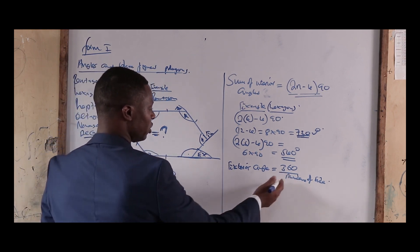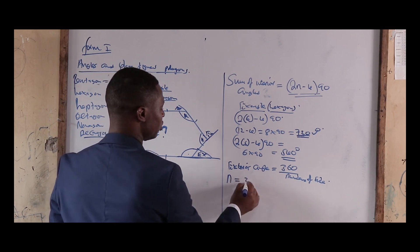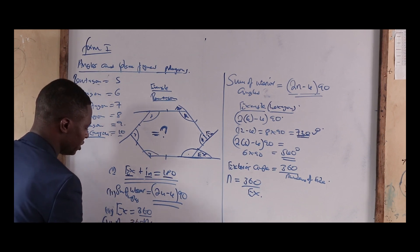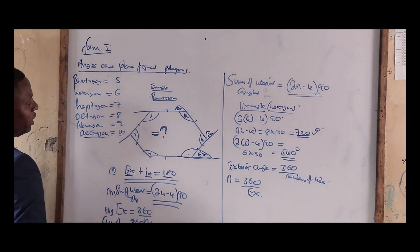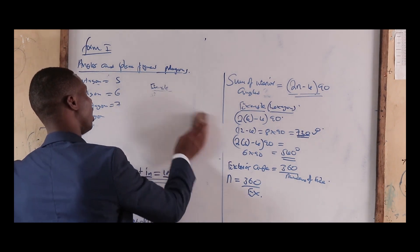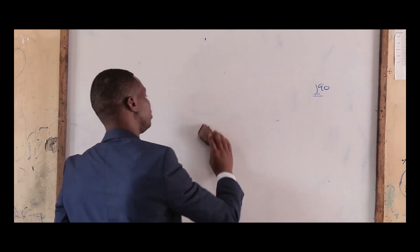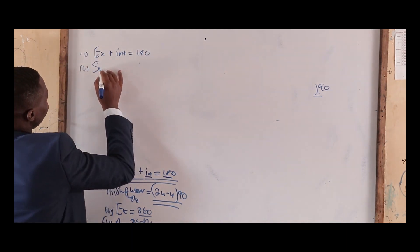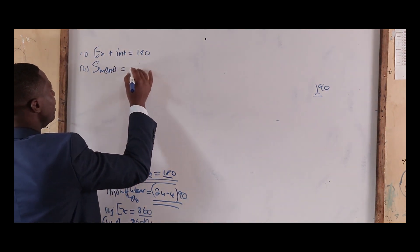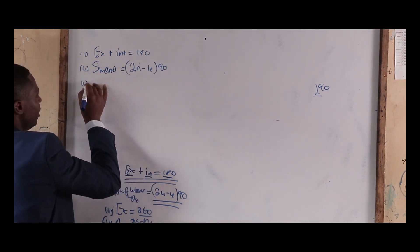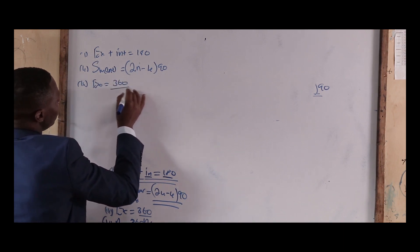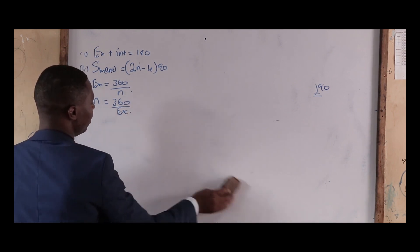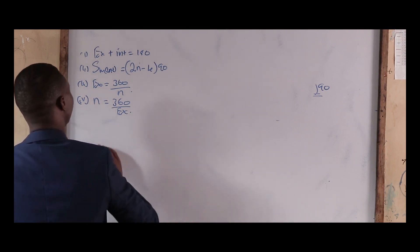So in this topic you must understand four key concepts. Number one: exterior angle plus interior angle equals 180 degrees. Number two: the sum of interior angles equals (2n − 4) × 90. Number three: the exterior angle equals 360 divided by the number of sides. Number four: the number of sides equals 360 divided by the exterior angle.